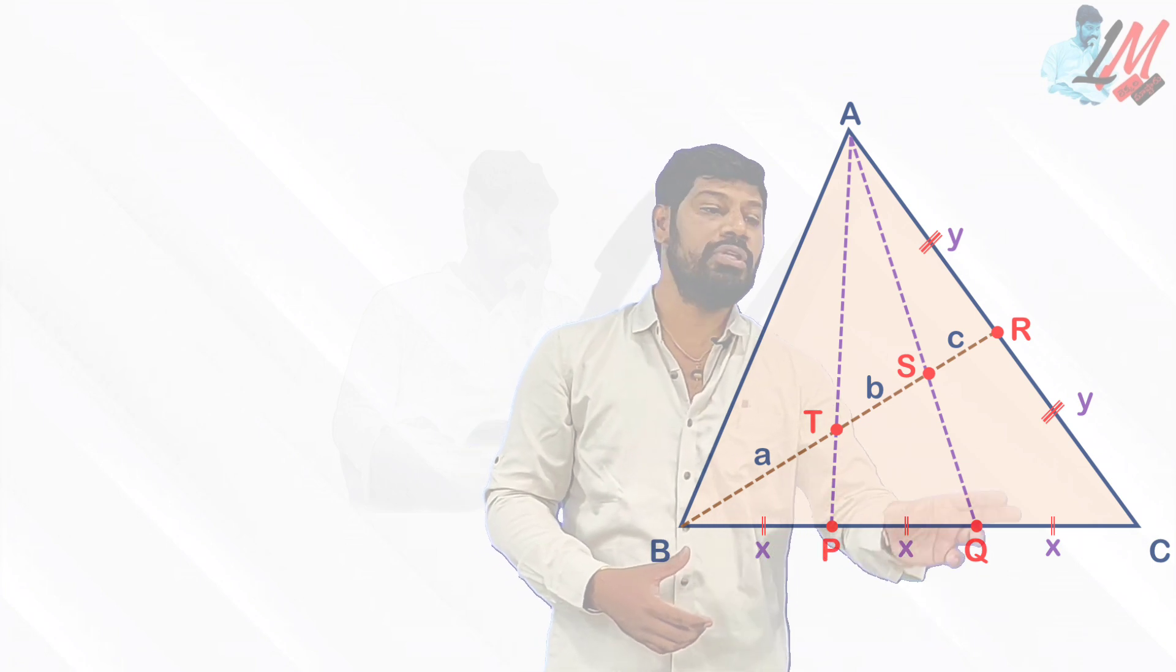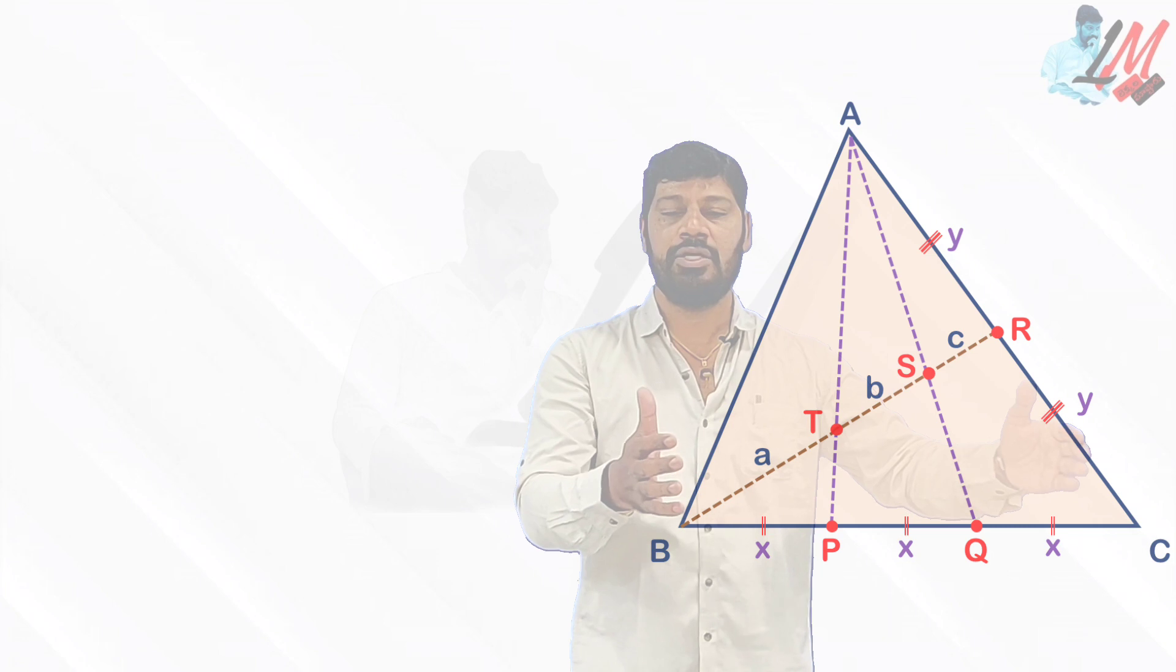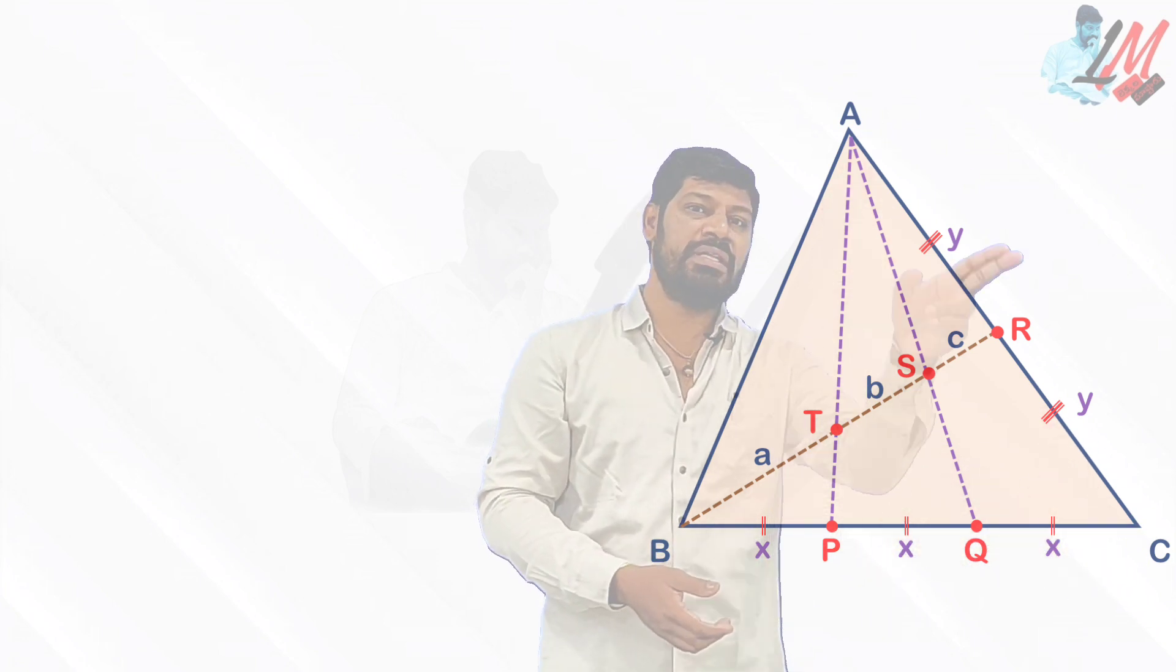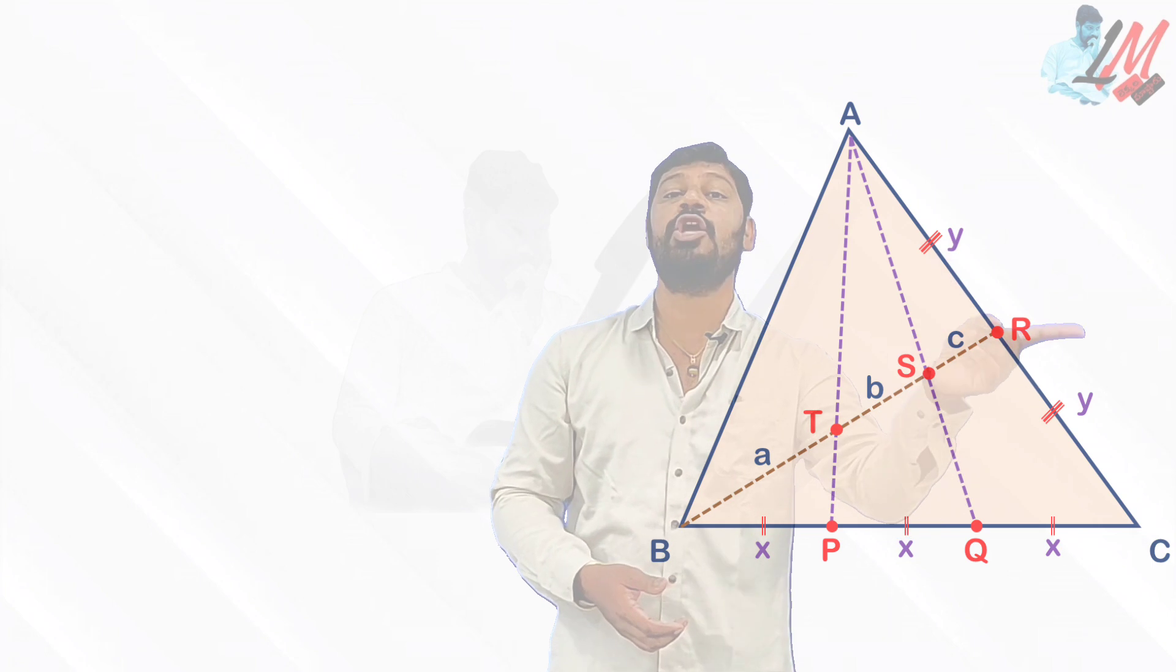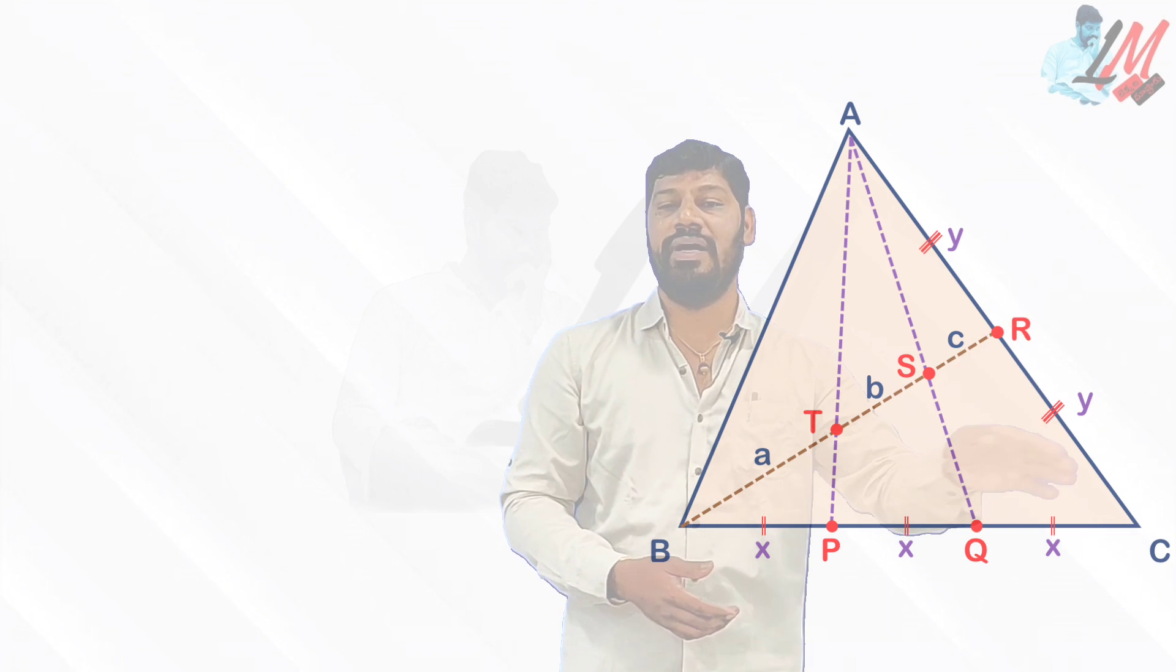Just let me assume this as something X. Then this is also going to be X for PQ, and this is also going to be X. So BP equal to PQ equal to QC, that is why I am considering as X, X, X, then the total length of BC is going to be 3X.